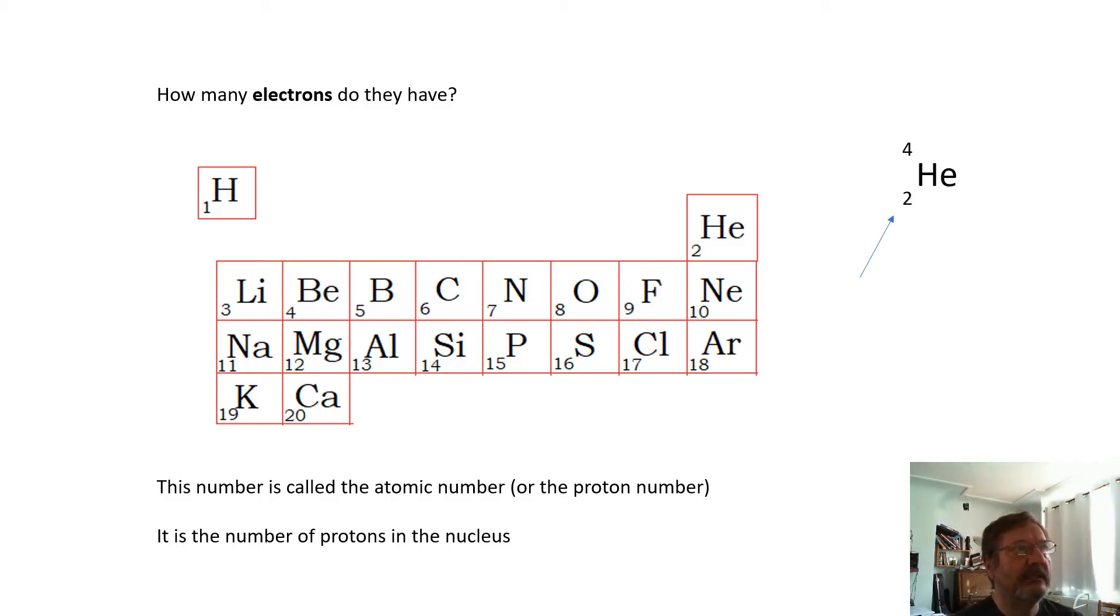You can figure out how many electrons they have, which is very useful. On a periodic table next to the element, there's a big number and a small number. Sometimes the big number's on top, sometimes it's on the bottom. Basically, the big number is the relative atomic mass and the small number is called the atomic number.